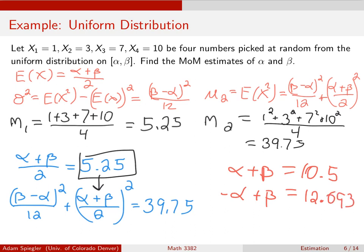And now this is a linear system, so this is much easier to solve than the system that we started with. So adding these two equations, I can solve for alpha and beta. In this case, finishing this up, our estimate for alpha would be negative 0.797, and our estimate for beta hat in this case would be 11.297.